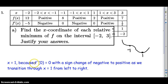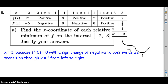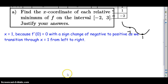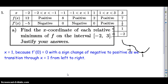x equals one is the relative minimum because the derivative is zero at x equals one, with a sign change from negative to positive as we transition through x equals one from left to right. That covers question A.